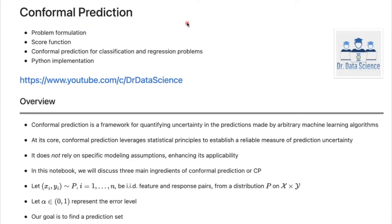Hello everyone, Dr. Data Science here. Today we are going to talk about conformal prediction. Conformal prediction is a framework for quantifying uncertainty in the predictions made by arbitrary machine learning algorithms. This means that you can apply conformal prediction to linear regression, a complex neural network model, or logistic regression. This is definitely something you want to add to your tool sets.